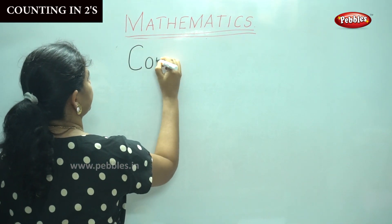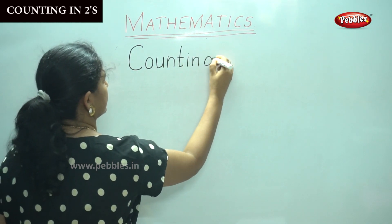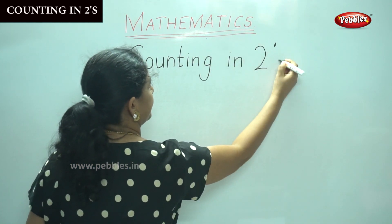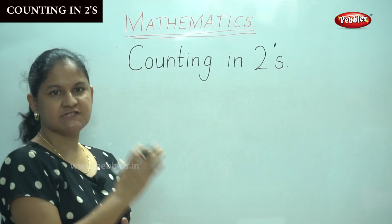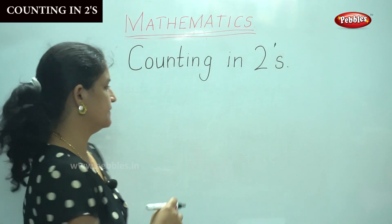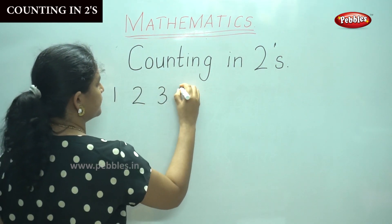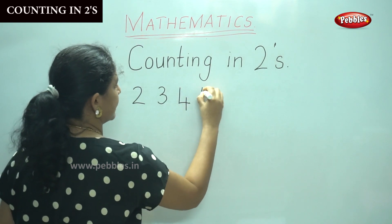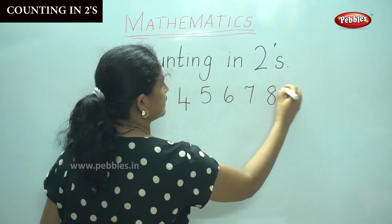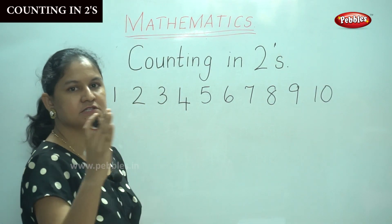I am going to write the numbers 1 to 10 and then I will show you how to do counting in twos. 1, 2, 3, 4, 5, 6, 7, 8, 9, 10. I have written numbers from 1 to 10.